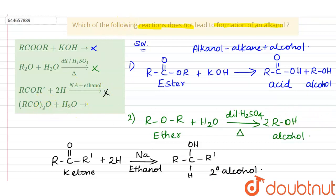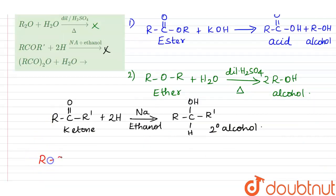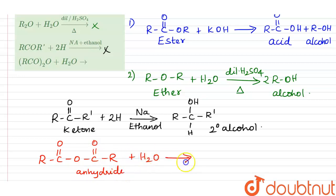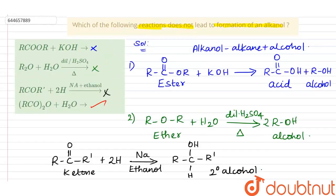Finally, (RCO)₂O when undergoes hydrolysis — here RCO double bond O-OC double bond OR — which is nothing but an anhydride. When this anhydride undergoes hydrolysis, there will be formation of RC double bond O-OH, which is an acid. Since both alkyl groups are the same, there will be two moles of the same acid. There is no formation of alcohol, and therefore no formation of alkanol. This is the exact answer, because the question asks which reaction does not lead to formation of an alcohol. The remaining three reactions all produce alkanol as a product. So the answer is the anhydride — (RCO)₂O — when it undergoes hydrolysis, forming acid and not alcohol or alkanol.